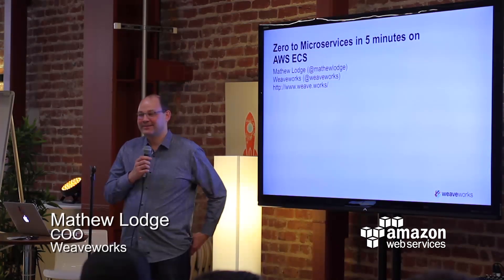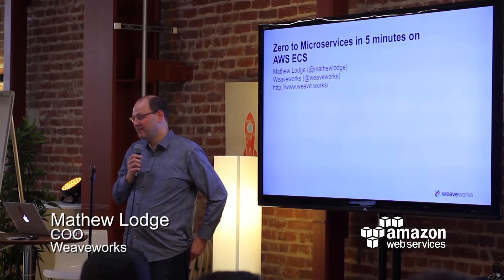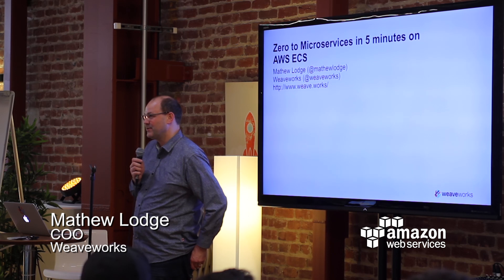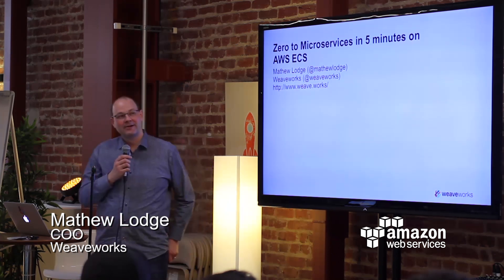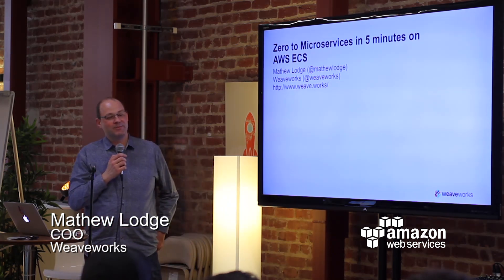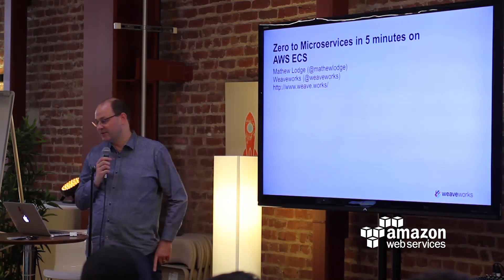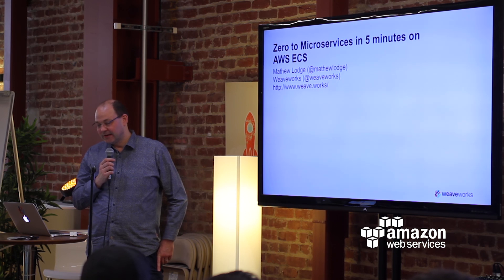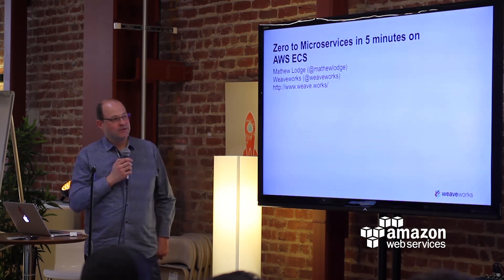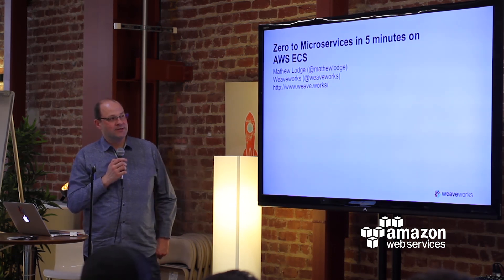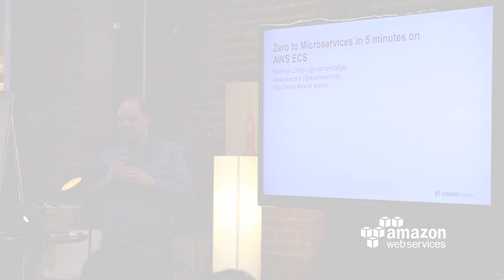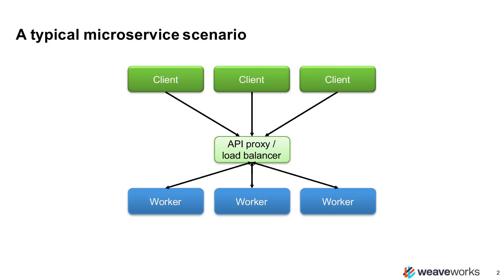My name is Matthew Lodge. I'm from Weaveworks. We're a small startup in the Docker space based here in San Francisco and also out of London. And I'm going to talk to you about deploying microservices on ECS and how you can do that more quickly and easily.